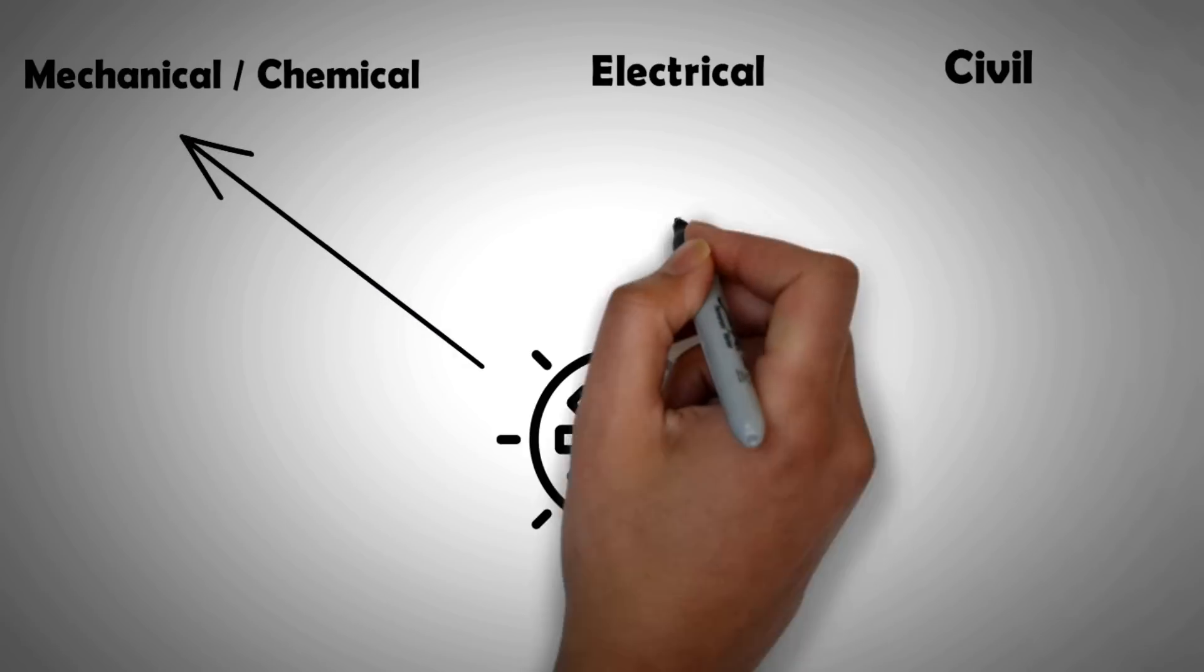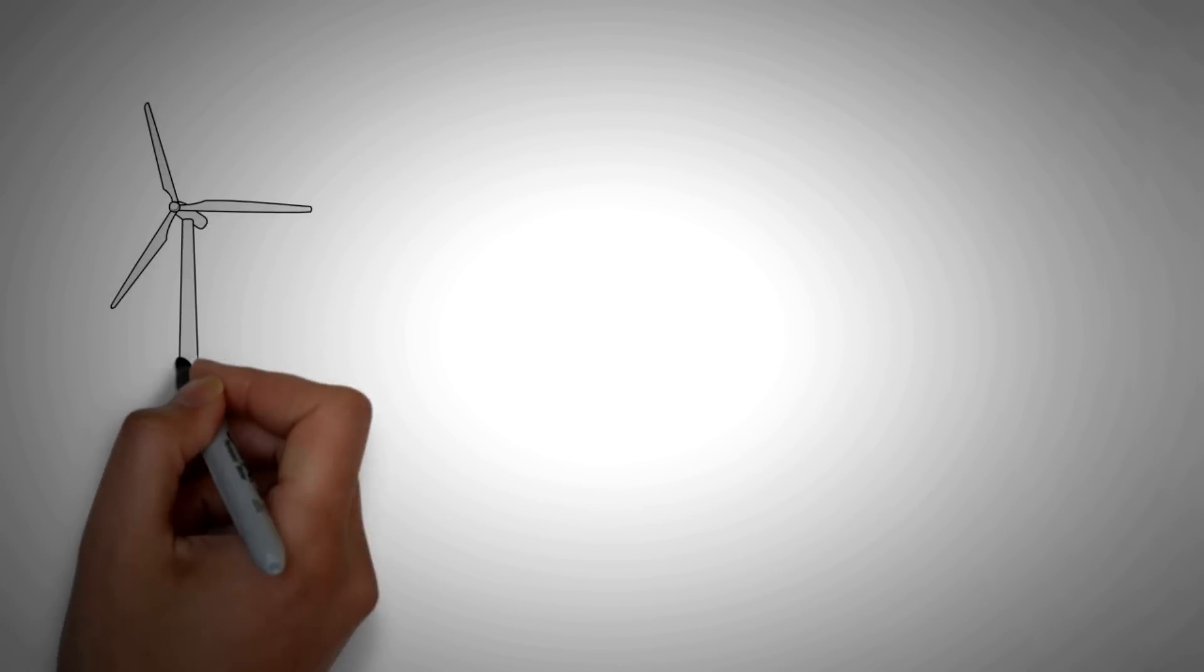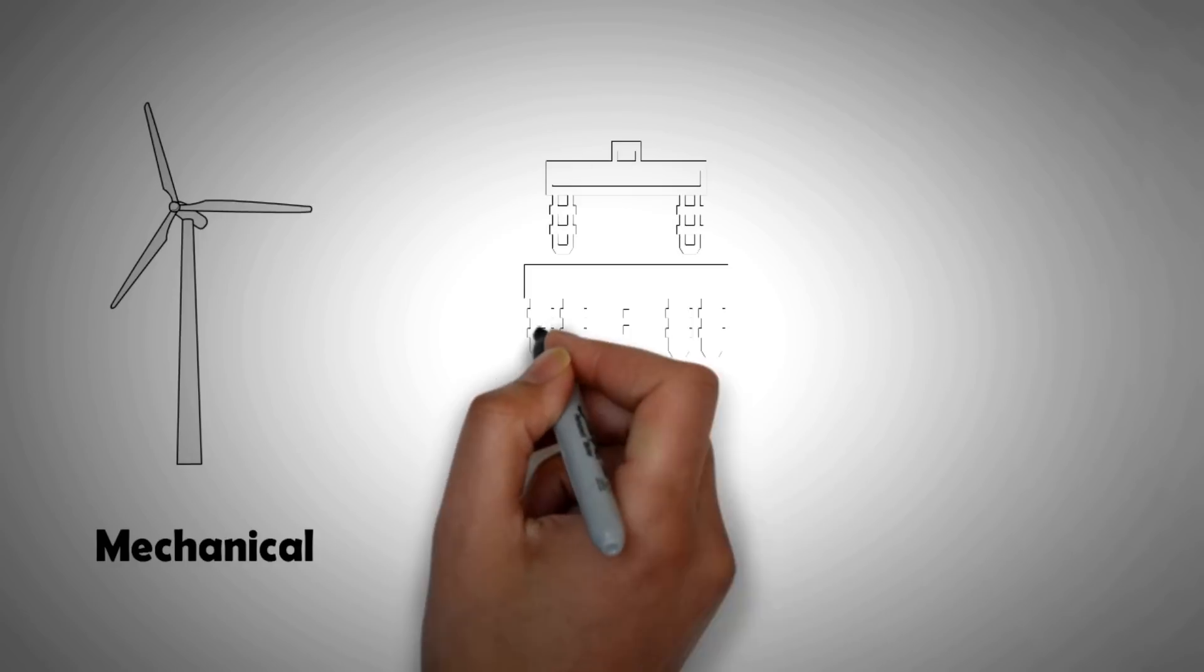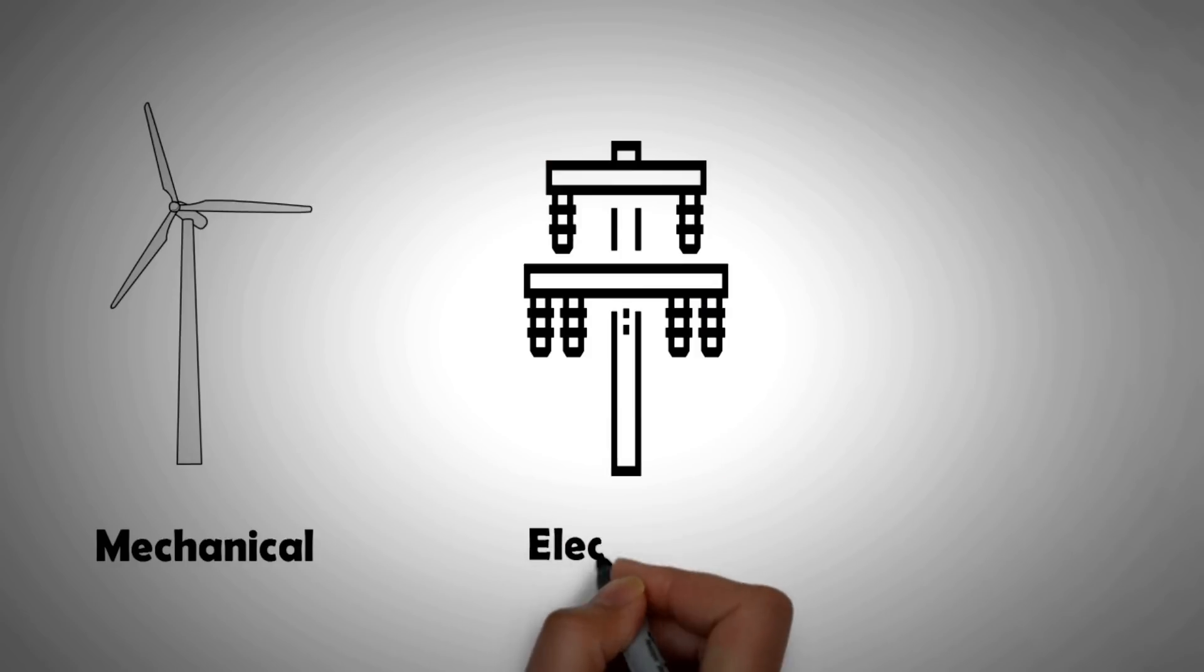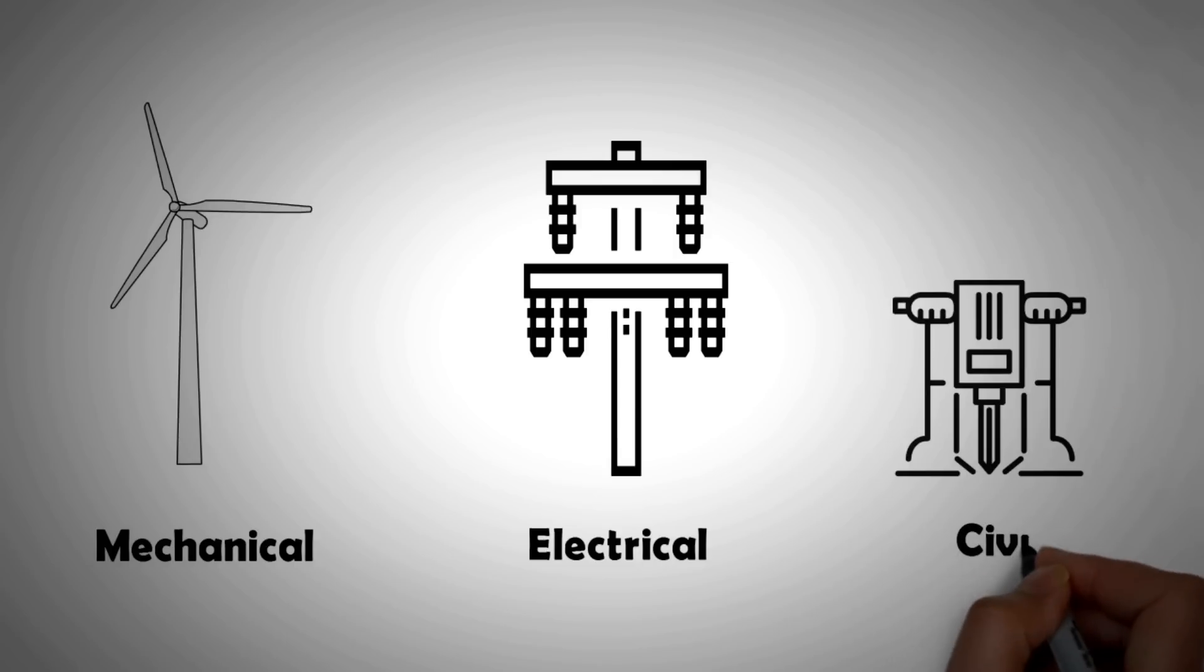The skills that you learn in the above mentioned fields of engineering that is mechanical, electrical, electronics and civil are very much applicable. For example, when it comes to designing wind turbines, it is a task that heavily involves the knowledge of mechanical engineering. Getting the system online requires electrical engineering skills, construction of dams or installation of wind turbines requires the knowledge of civil engineering.